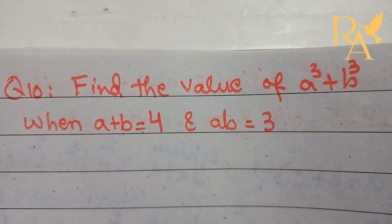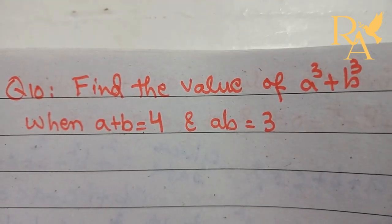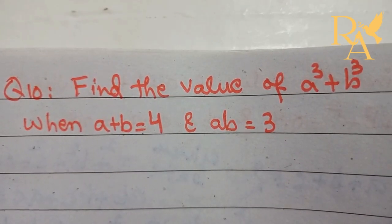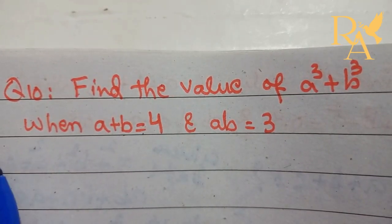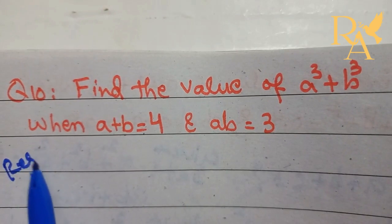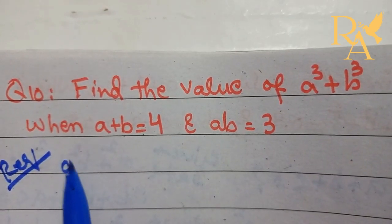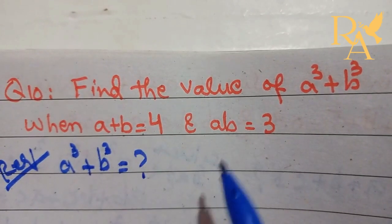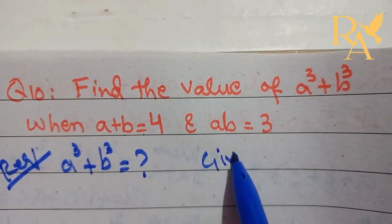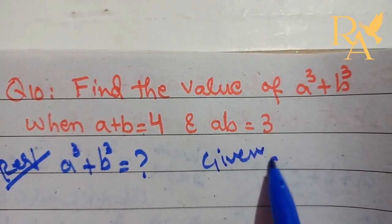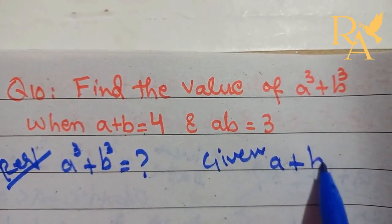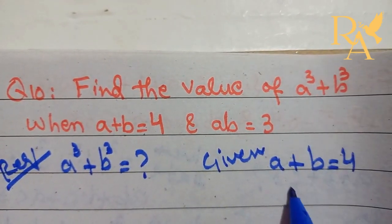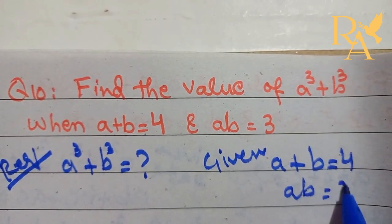Now we are going to solve question number 10 of exercise 3.2. It is a very simple and easy question. In this question, what is required? Required is A cube plus B cube. And what is given? A plus B is equal to 4, and AB is equal to 3.